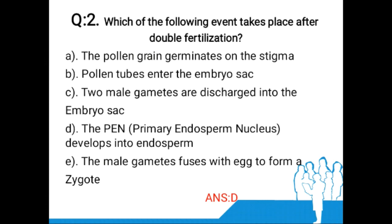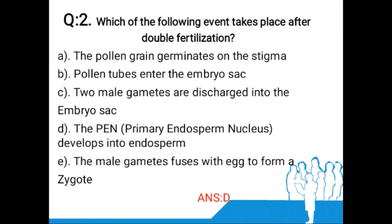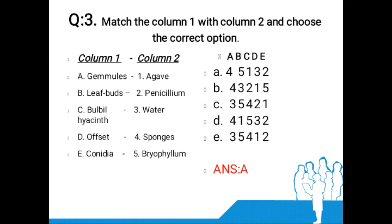Option D: the primary endosperm nucleus develops into endosperm. Option E: the male gamete fuses with the egg to form a zygote. The answer is option D. Double fertilization, an event unique to flowering plants, involves two types of fusion: syngamy and triple fusion. During post-fertilization events, the central cell after triple fusion becomes the primary endosperm cell (PEC) and develops into endosperm, while the zygote develops into an embryo.